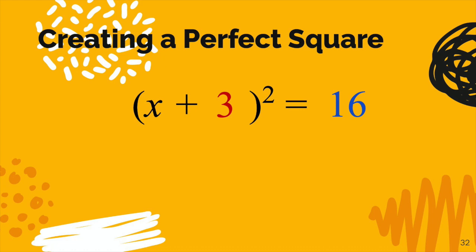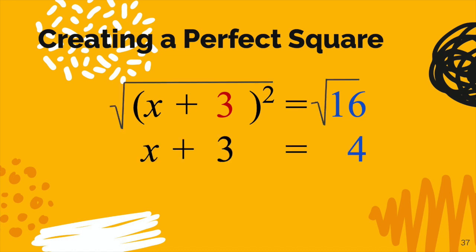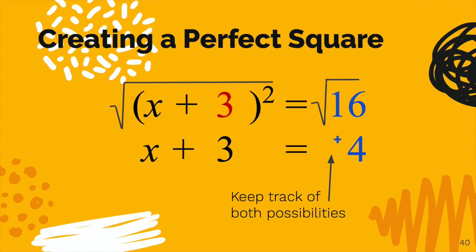Now we can focus on the equation: (x + 3) squared equals 16. We want to get rid of that square because the x we need to solve for is buried inside that parenthesis. How do you undo a square? With a square root. We're going to apply a square root on both sides of the equation. It cancels the square on the left and we end up with 4 on the right. But whenever you take a square root in an equation, you have to keep track of both a positive and a minus on the right side, because negative 4 times negative 4 is also positive 16.